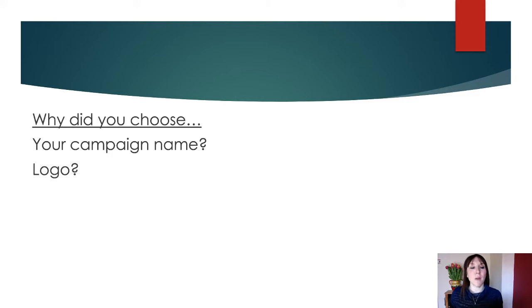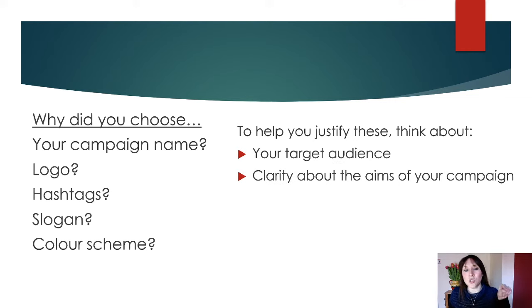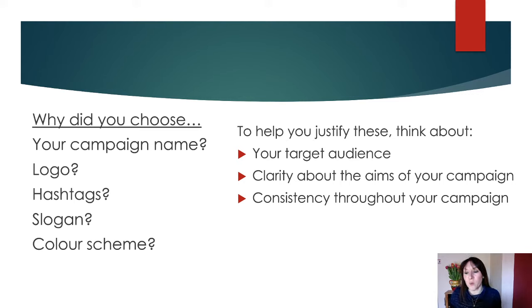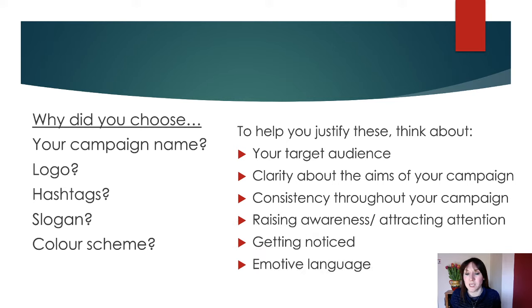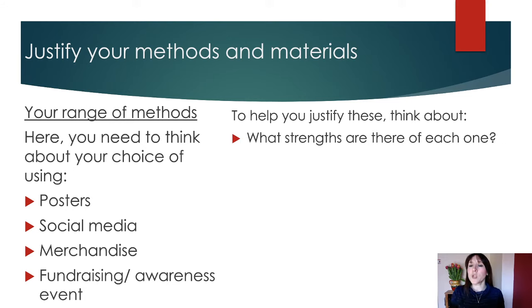Justify why you chose your campaign name, logo, hashtags, slogan, and colour scheme. Why those colours? Why that logo? Why that name? Think about your target audience — why did those things work for them and for your aims? Consider consistency throughout your campaign, raising awareness, attracting attention, getting noticed, and the language you used. You need to use a range of methods — posters, social media, merchandise, fundraising, events, and awareness. What are the strengths of each? Why did these things work compared to others? Why have they worked for other campaigns that you want to emulate?